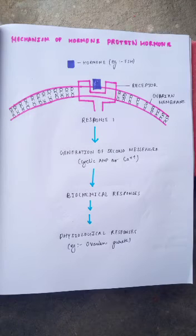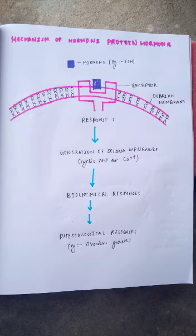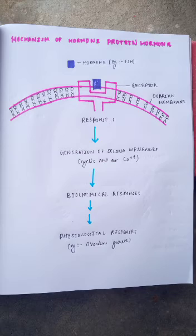Here we can see the mechanism of hormones in protein hormones. A hormone like FSH binds to the ovarian membrane receptor and generates a second messenger such as cyclic AMP or calcium (Ca²⁺), which gives biochemical responses and then physiological responses, for example ovarian growth.